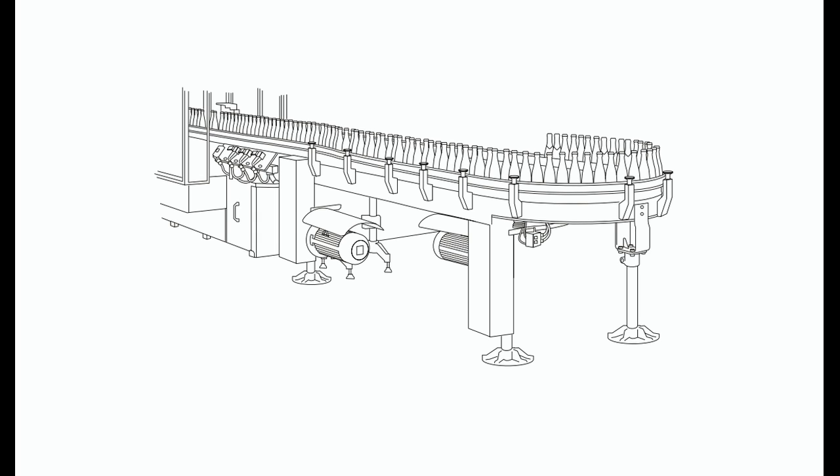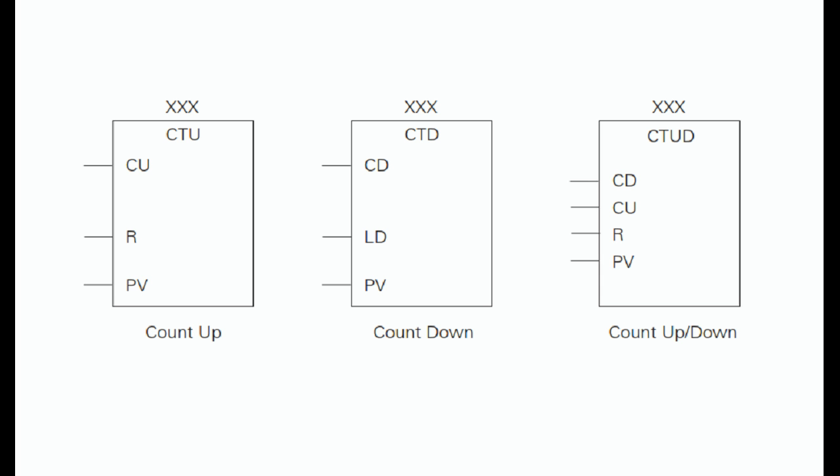The S7-200 uses three types of counters: up counter (CTU), down counter (CTD), and up/down counter (CTUD). There are 256 counters in the S7-200, numbered C0 through C255. The same number cannot be assigned to more than one counter — for example, if an up counter is assigned number 45, a down counter cannot also be assigned number 45. The maximum count value of a counter is plus or minus 32,767.